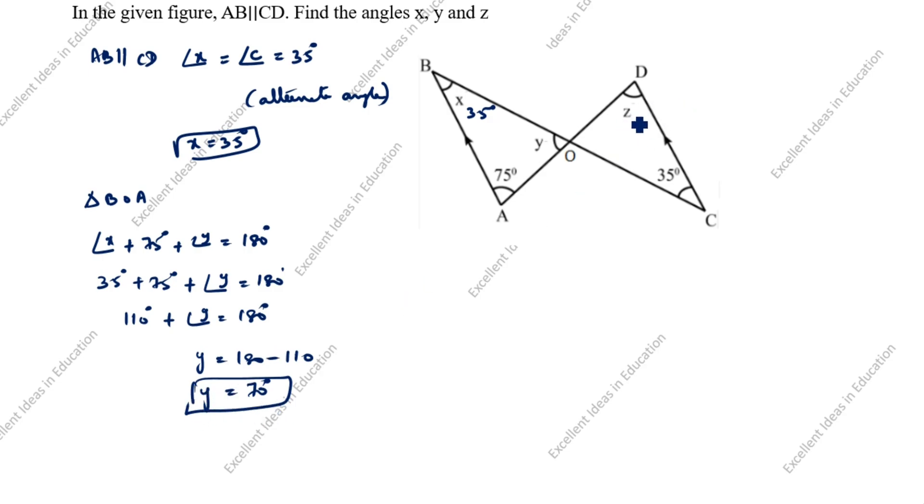Now we will find Z. How will we find Z? Angle A is equal to angle D. So angle D is equal to 75 degrees. Angle Z is equal to 75 degrees. This is alternate angle.